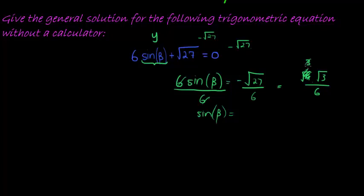Now this, 3 divides into itself once and into 6 twice. So this can simplify to square root of 3 over 2. Don't forget the negative. I almost did. So the square root of 3 over 2 is one of our special angles.